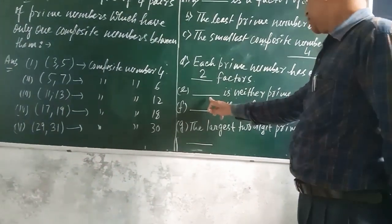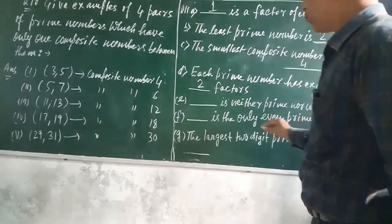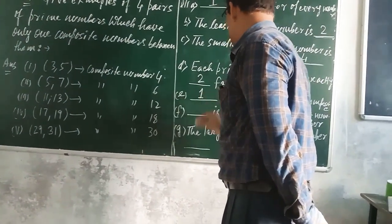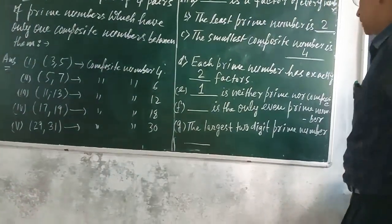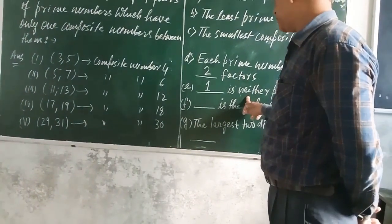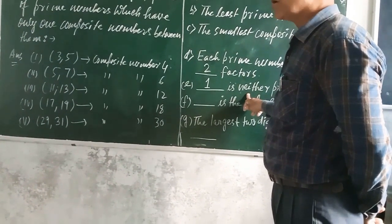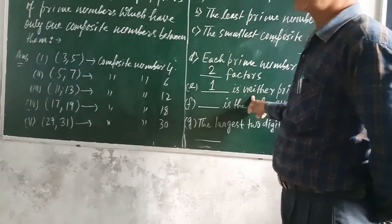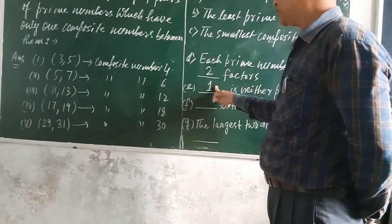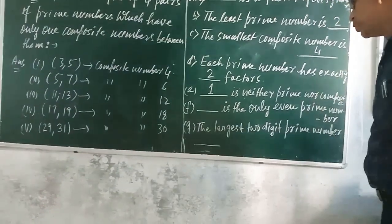The next one is: Dash is neither prime nor composite. The answer is 1. 1 is neither prime nor composite. Why? Because 1 is not prime as it has only 1 factor. It is not composite either, because composite numbers are those which have more than 2 factors, but 1 has only 1 factor. So, 1 is neither prime nor composite.